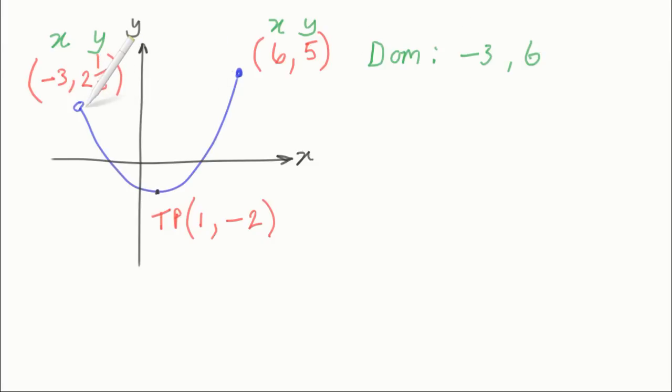An open circle like this means that the x and y values are not included, or that point is actually not included on the graph, so it has a round bracket. And a colored in circle on the end of a graph means that you are including both of those x and y values. So there's the domain.